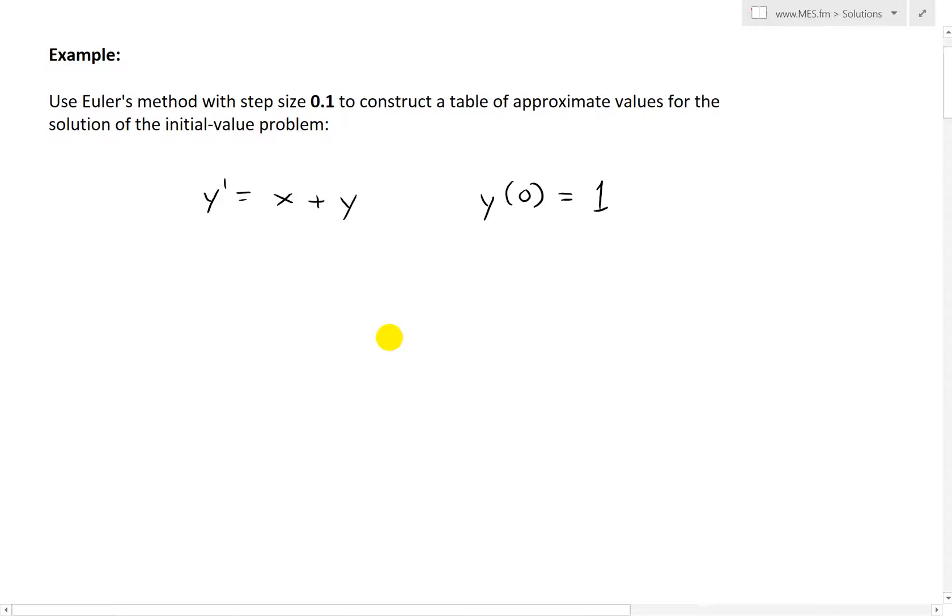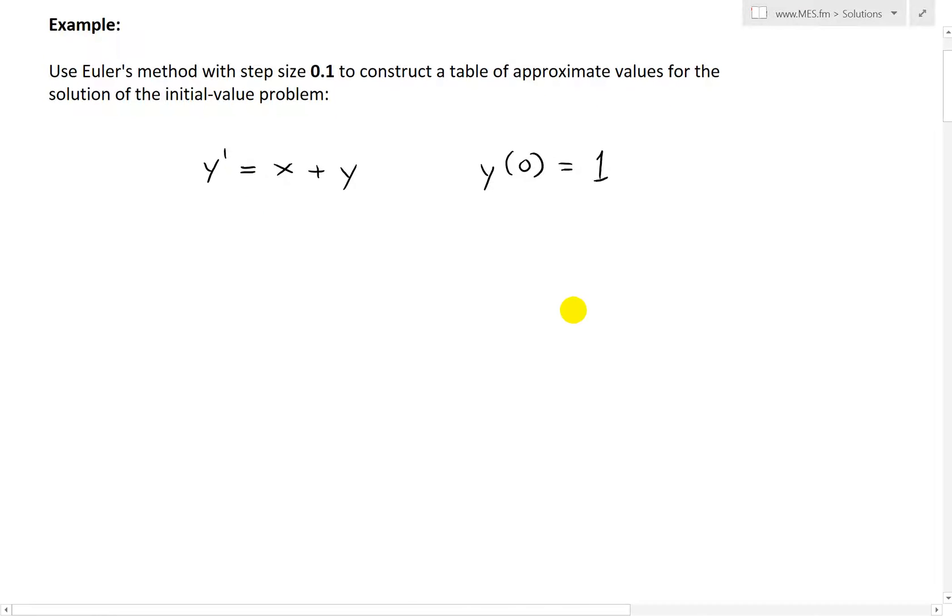This one that we dealt with in my earlier videos. Y prime is equal to X plus Y. And then we have the initial value of Y of 0 is equal to 1. Or when X is 0, Y is 1.